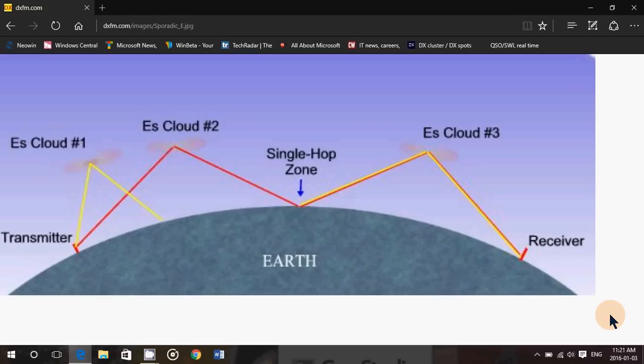But there's something called Sporadic eSkip, and that's one of the phenomenons that I love when it happens because it's just amazing what you can hear and what it can actually do. Sporadic eSkip is simply a mode of propagation that happens as ionized patches, and here they're represented by kind of what looks like very pale clouds.